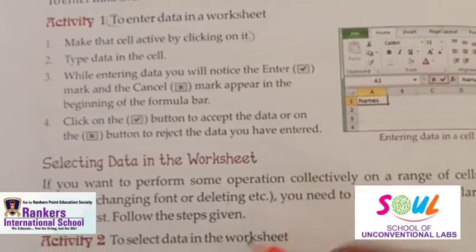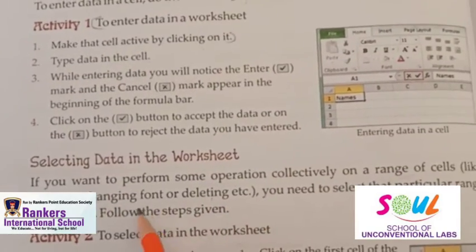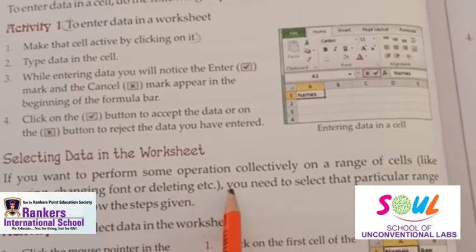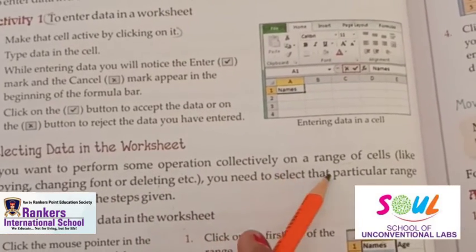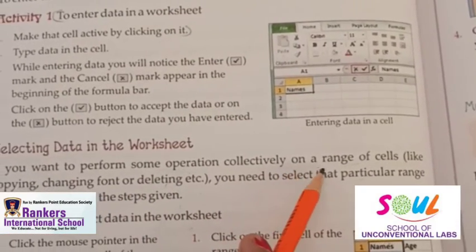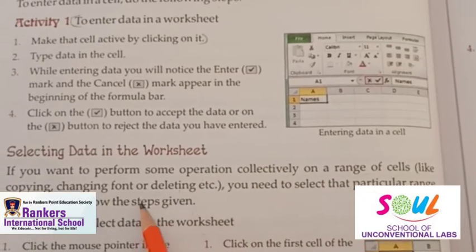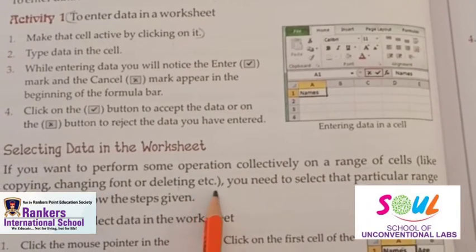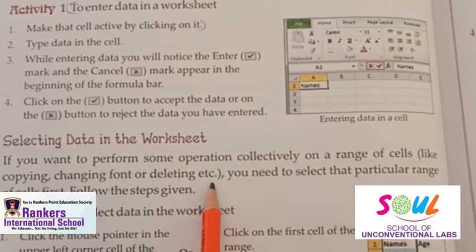Now, selecting data in a worksheet — how do we select data? If you want to perform some operation collectively on a range of cells, such as copying, changing font, or deleting, you need to select that range first.